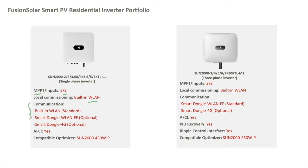For communication with the monitoring platform, you can use the built-in WLAN for the single-phase. So if you have a router in your home, you can connect directly to it. Or you can use dongles — one would be the smart dongle WLAN, which also has a fast Ethernet feature, so you can connect directly by cable to the router for more stable communication. If you don't have a router, you can buy the smart dongle 4G, insert a SIM card, and send information directly to the monitoring platform.